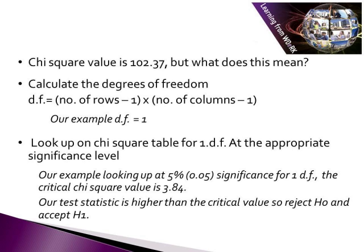Our chi-squared value is 102.37 — but what does that mean? We need to calculate the degrees of freedom, which is the number of rows minus one times the number of columns minus one. In our example, that gives a degrees of freedom of one. Looking up the chi-squared table for degrees of freedom one at the 0.05 significance level, the critical value is 3.84. Our test statistic of 102.37 is higher than the critical value, so we reject our null hypothesis and accept the alternative.